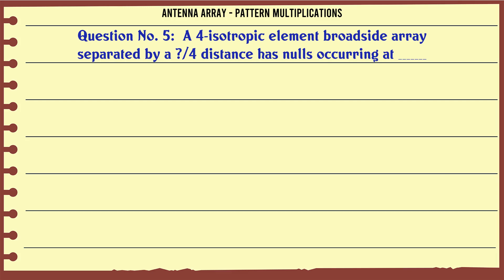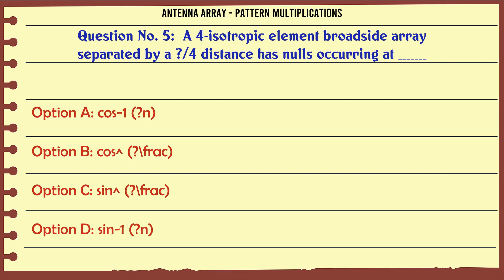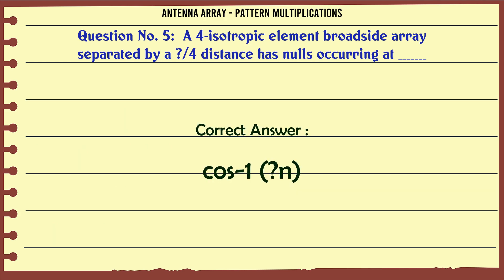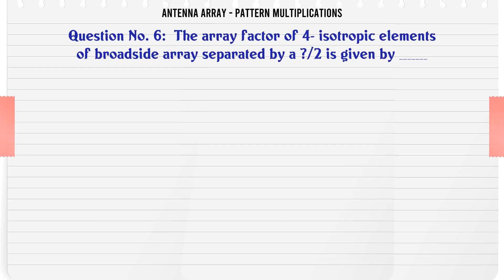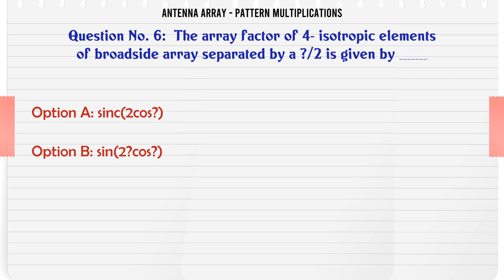A 4-isotropic element broadside array separated by a λ/4 distance has nulls occurring at: A. cos⁻¹(n), B. cos⁻¹(n/2), C. sin⁻¹(n/2), D. sin⁻¹(n). The correct answer is cos⁻¹(n).